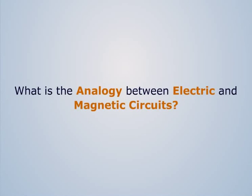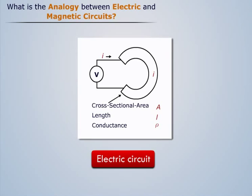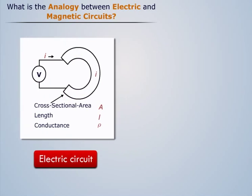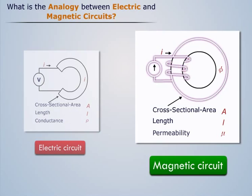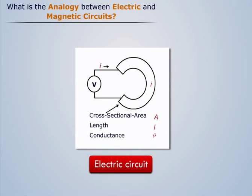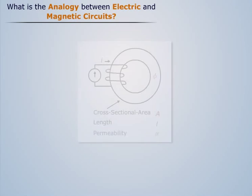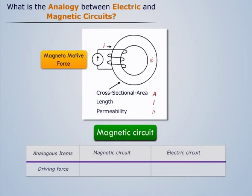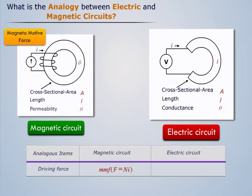What is the analogy between electric and magnetic circuits? Consider an electric circuit as shown; its corresponding magnetic circuit will be as shown. This electric circuit consists of a voltage source V which sends a current I through an electrical load of resistance R. In a magnetic circuit, the magnetomotive force corresponds to the electromotive force or voltage in an electrical circuit.